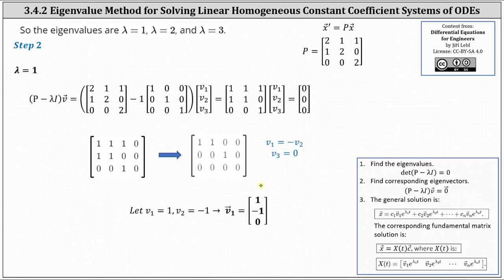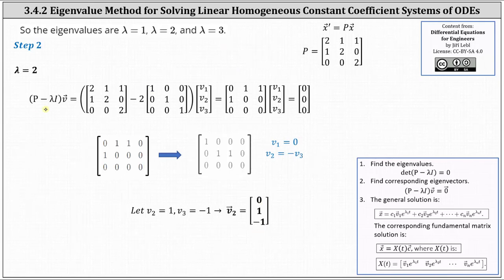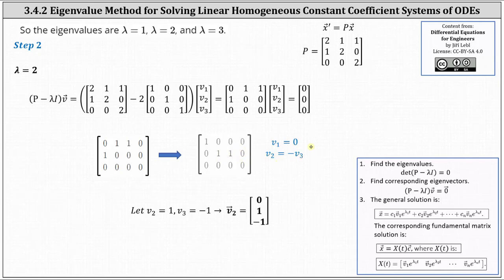Now we do the same for lambda equals 2. The only difference is now lambda is 2. Simplifying inside the parentheses, we have the 3 by 3 matrix with entries 0, 1, 1; 1, 1, 0; and 0, 0, 0 times vector v equals the zero vector. Writing the augmented matrix in reduced row echelon form, row 1 indicates v1 equals 0, and the second row indicates v2 plus v3 equals 0, so v2 equals negative v3. Letting v2 equal 1, v3 equals negative 1, and v1 equals 0, giving eigenvector (0, 1, -1).